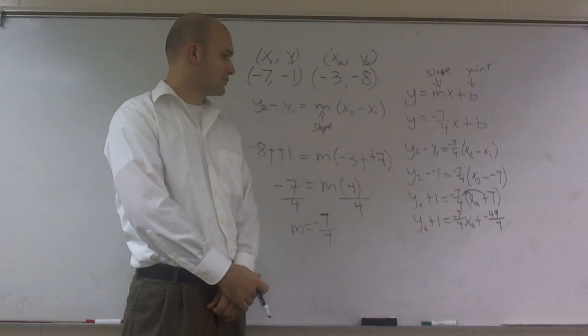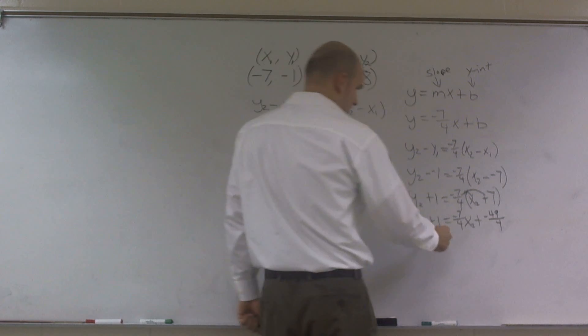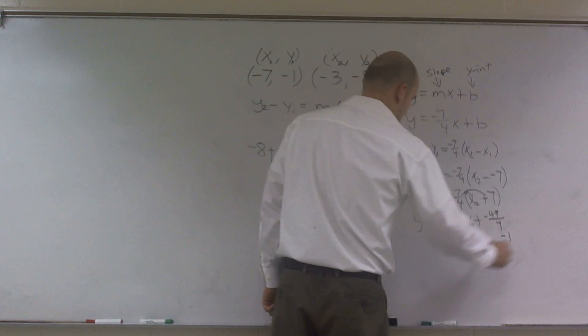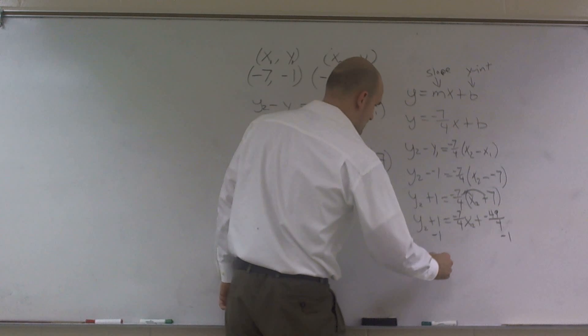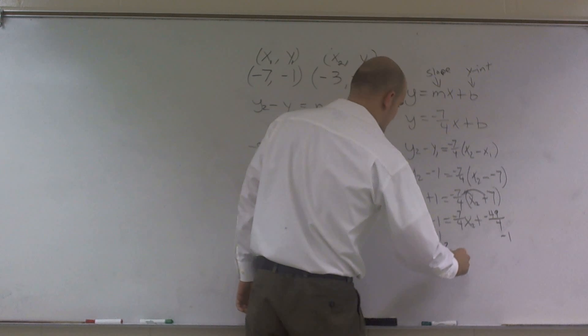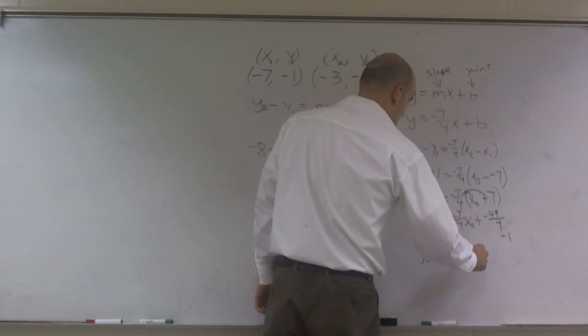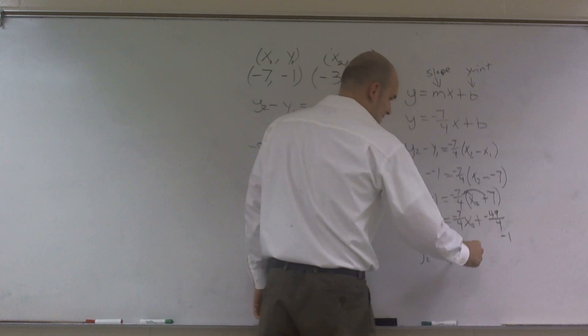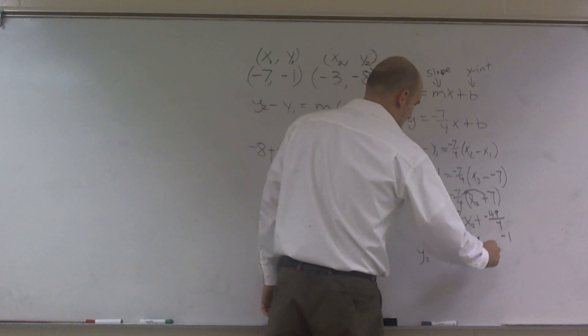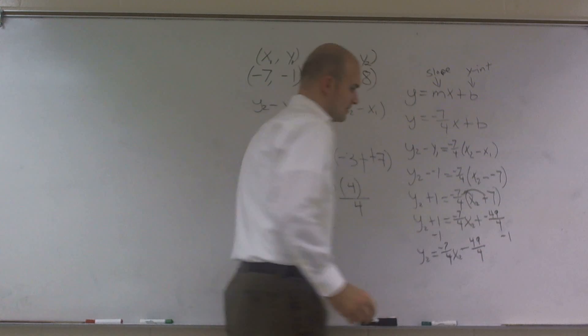It's getting a little confusing. Well, again, I'll subtract my 1, and I get y2 equals a negative 7 fourths x2. And instead of a plus and a negative, I'm just going to subtract a 49 over 4.